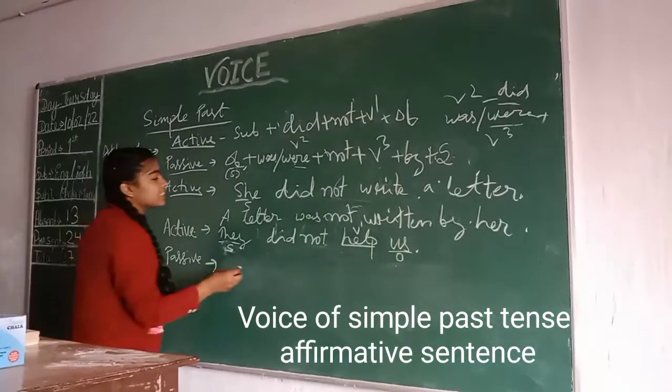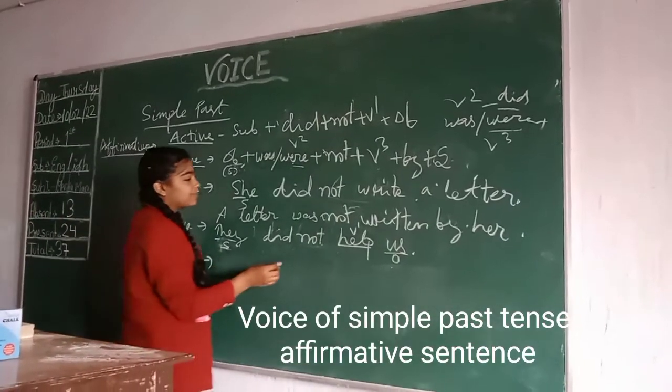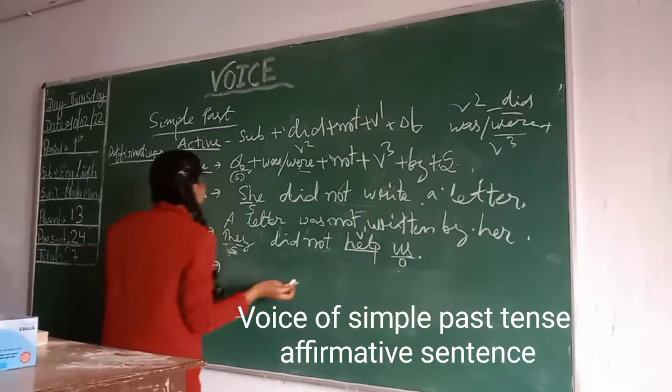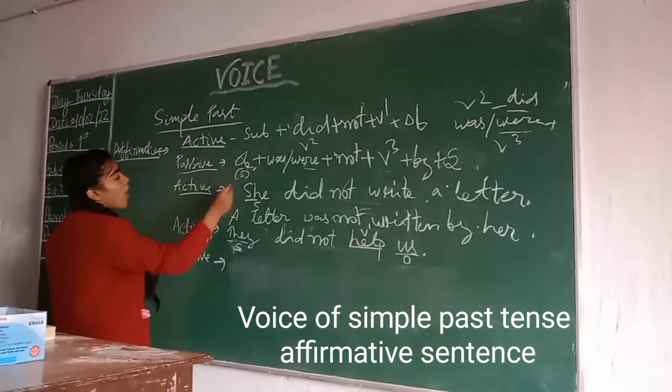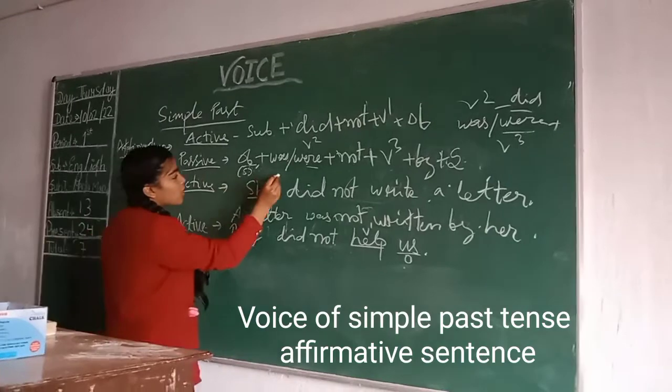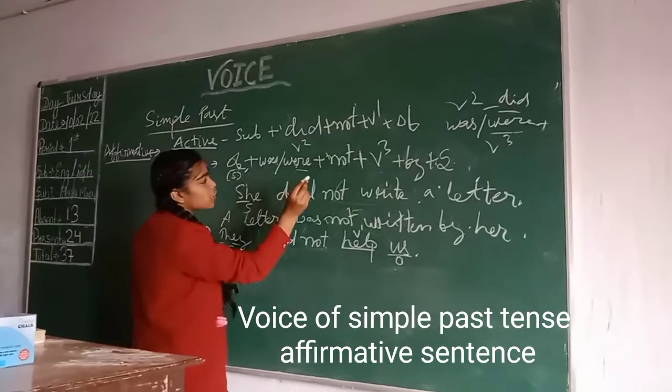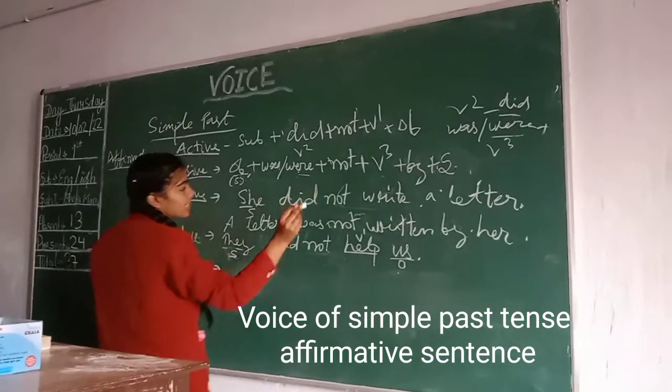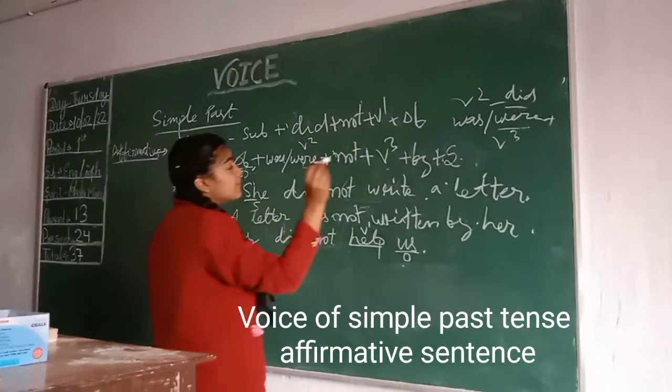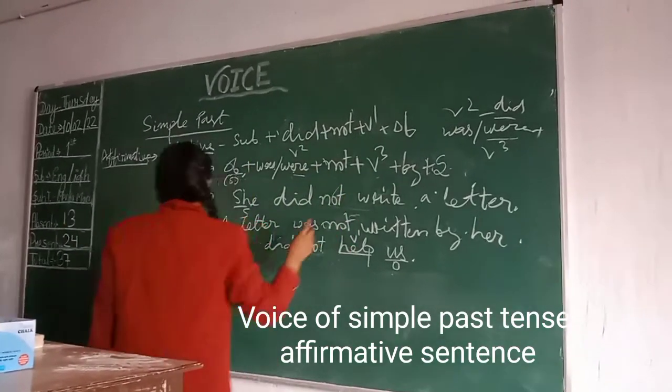The statement is 'they did not have us,' and this structure is: object + was/were + not + b3 + by + subject.